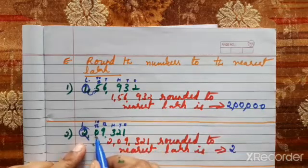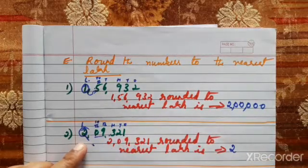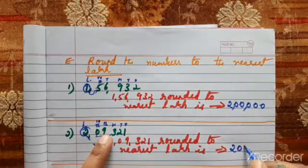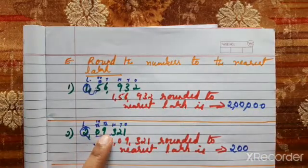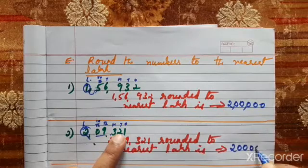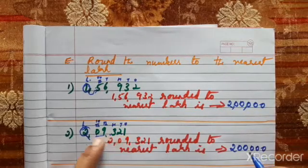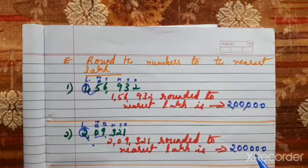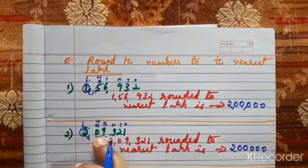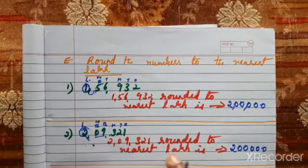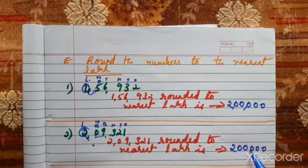Once the door is knocked, this person becomes poor. 0 is 0 only, 9 becomes 0, 3 is 0, 2 is 0, 1 is 0 — all the digits are now 0. So 29,321 rounded to the nearest lakhs place is 2 lakhs.